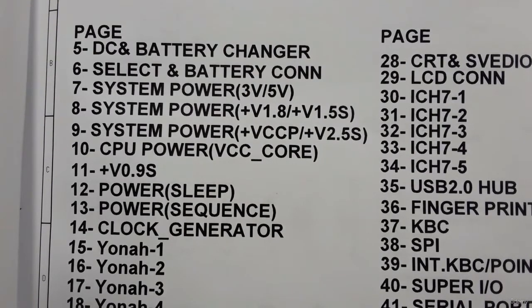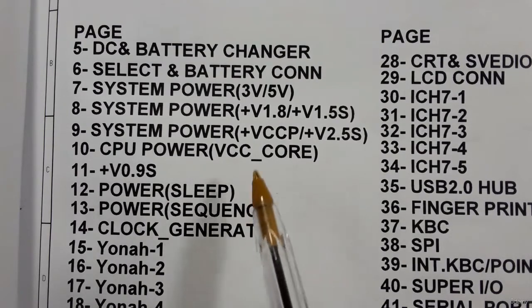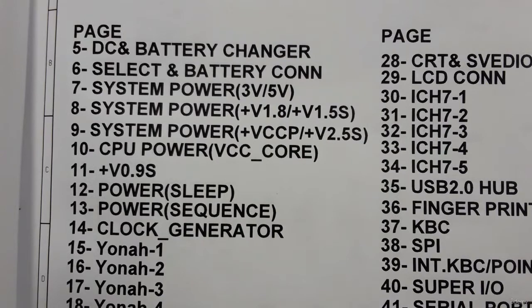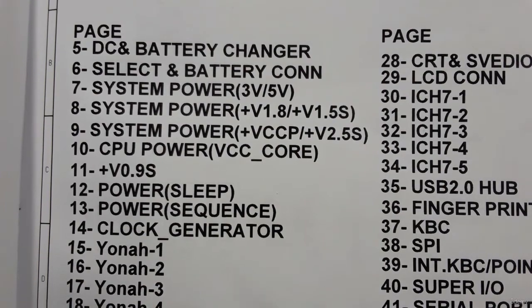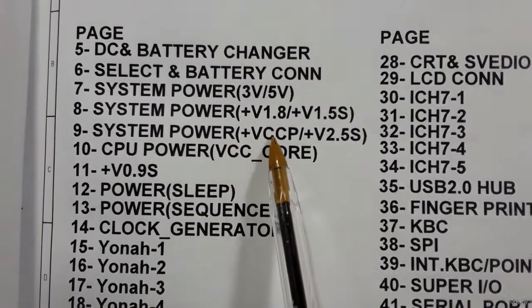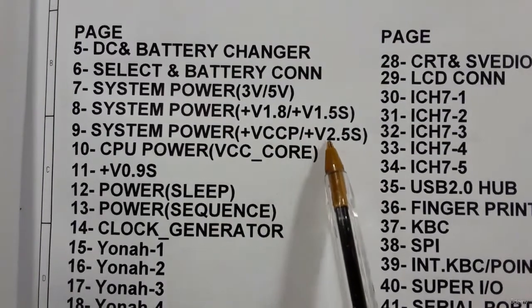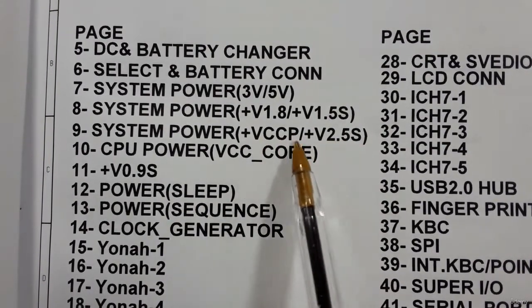The power of RAM differs according to its type. For DDR1 the power is 2.5 volts. For DDR2 the power is 1.8 volts. For DDR3 the main power is 1.5 volts. For DDR4 the power is 1.8 volts, and for DDR5 the power is also 1.8 volts.